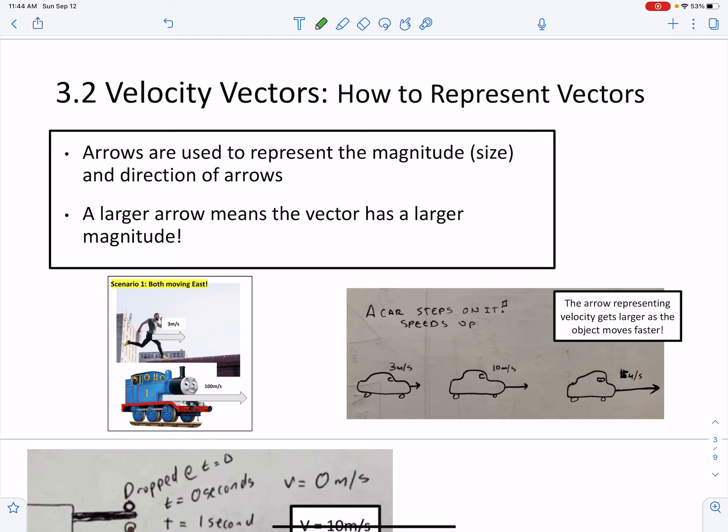Alright, so when we represent vectors, we're going to use arrows. Arrows are used to represent the magnitude, size, and direction of the vectors itself. A larger arrow means the vector has a larger magnitude.